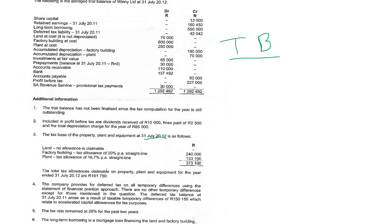Our current year ends 31 July 2012, which means our year begins 1 August 2011. The company provides deferred tax on all temporal differences. You can see the deferred tax balance on 31 July 2011 — the previous year end — arose as a result of a taxable temporal difference. They gave us this amount as our deferred tax balance from the previous year end. Here our deferred tax liability is 42,000.